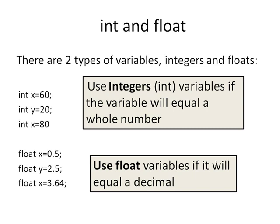In processing there are two types of variables. Integers and floats. Integer that we actually write is just int. You don't spell out all of integer and it's not capitalized. Integer is the variable type that you would use if you want your variable to equal a whole number. So I have int x equals 60, y equals 20, int x so this is my variable type this is what I'm calling my variable and this is the value it's equaling.